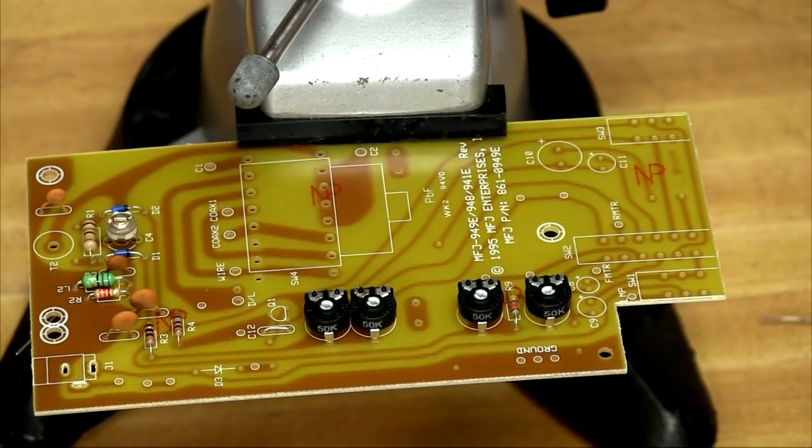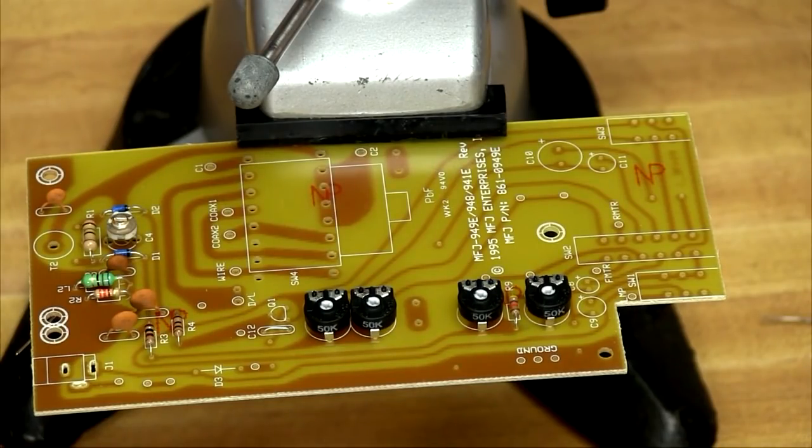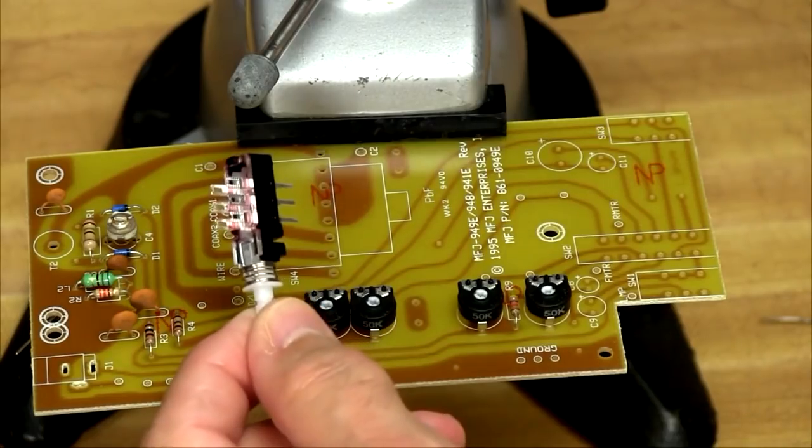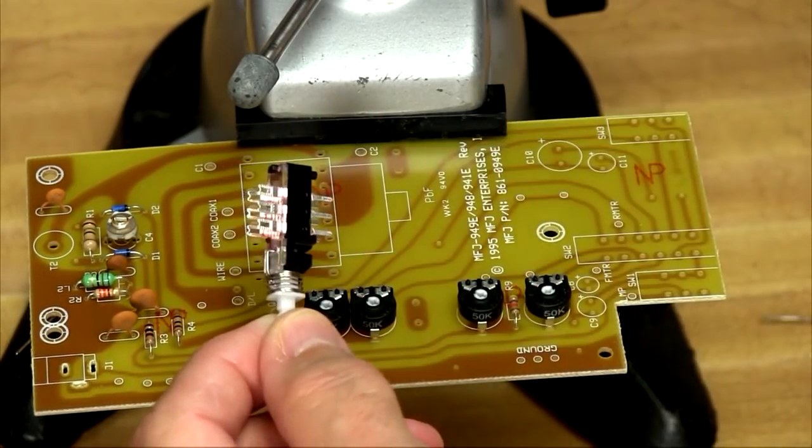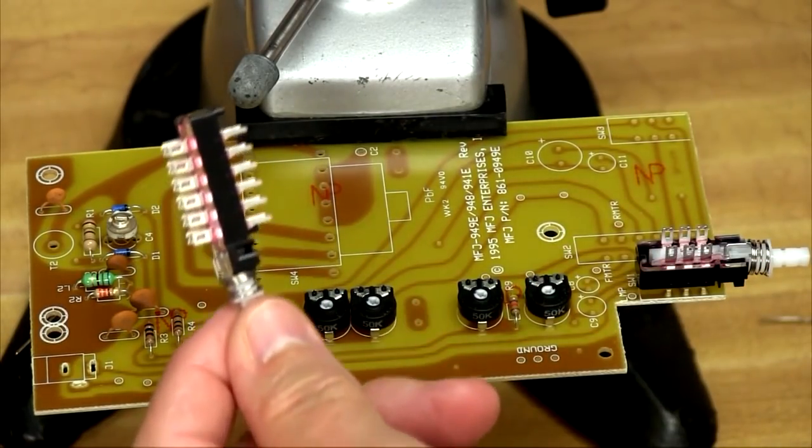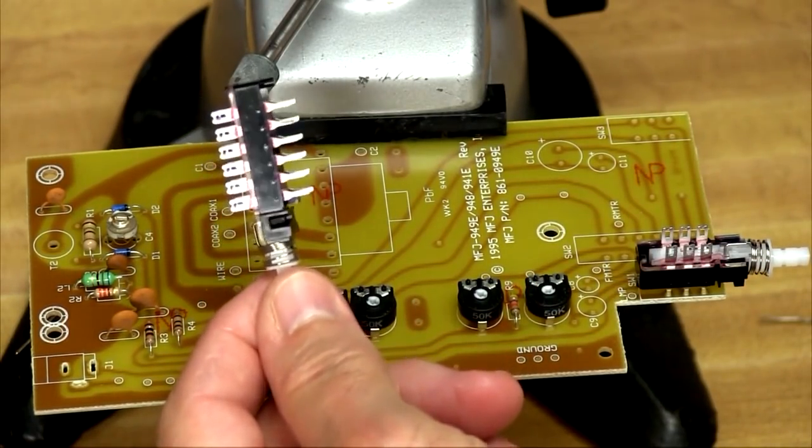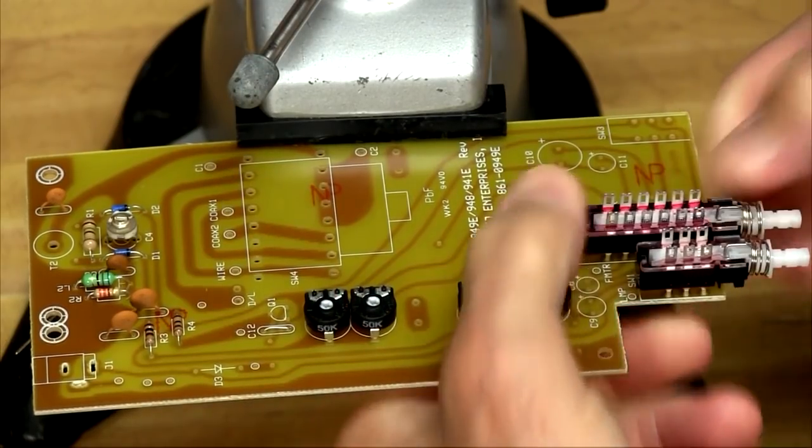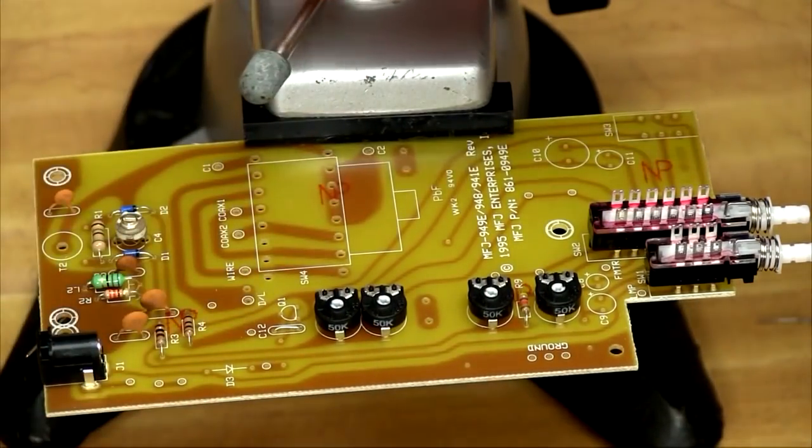Next, we're going to install some switches and the power jack. First, we'll install the double pole double throw push button switch, which has six pins on it here. That will go into the switch one position. And the other one, which is a four pole double throw, has 12 pins. That will be switch two. And we'll do the power jack as well.